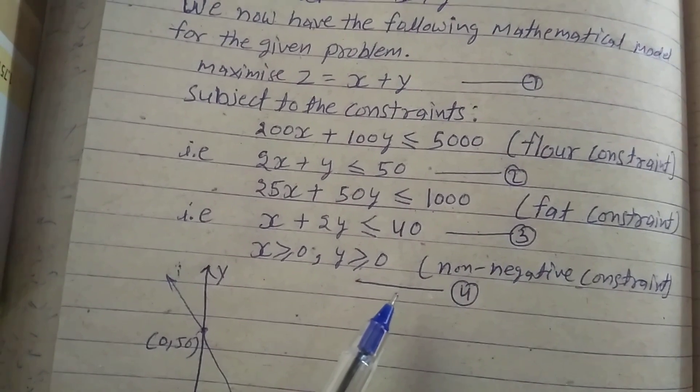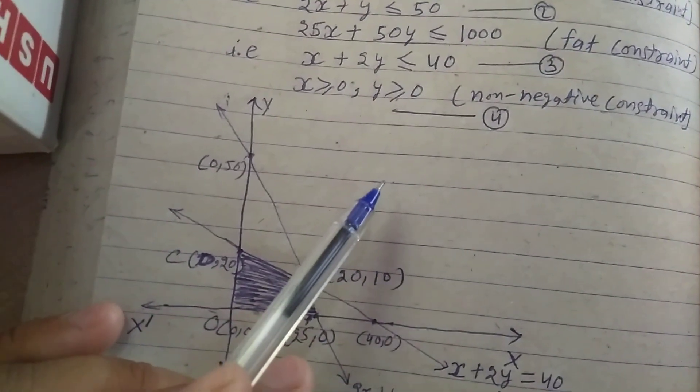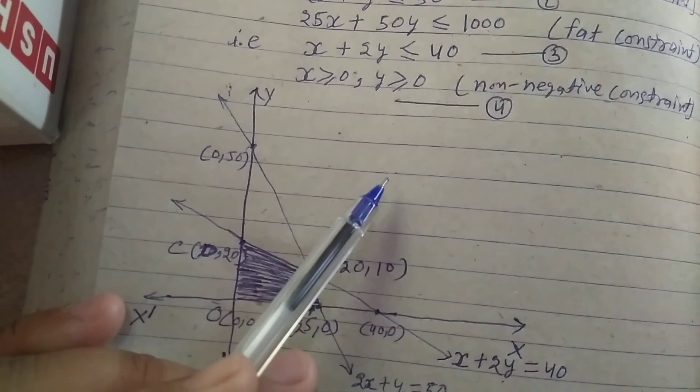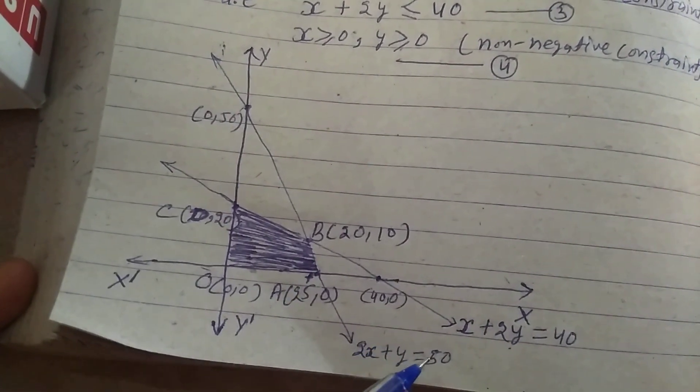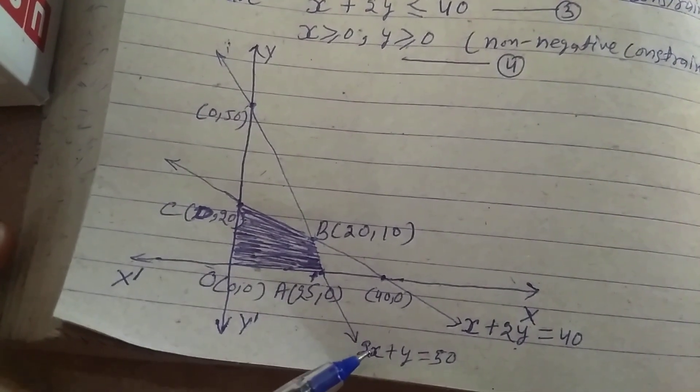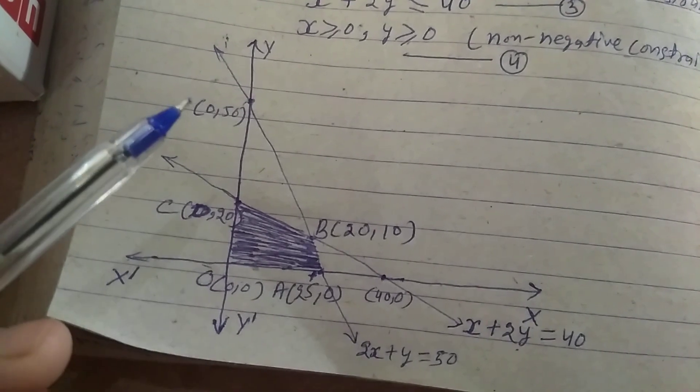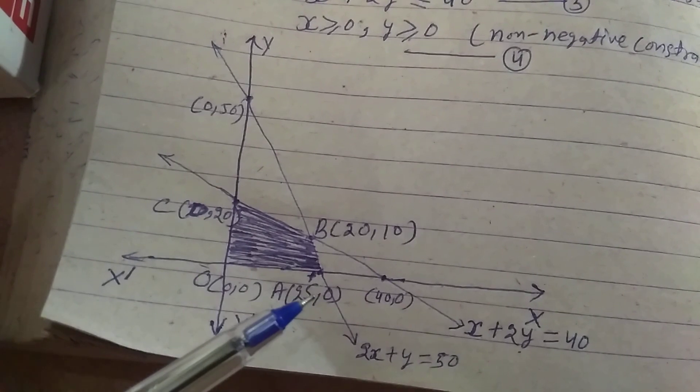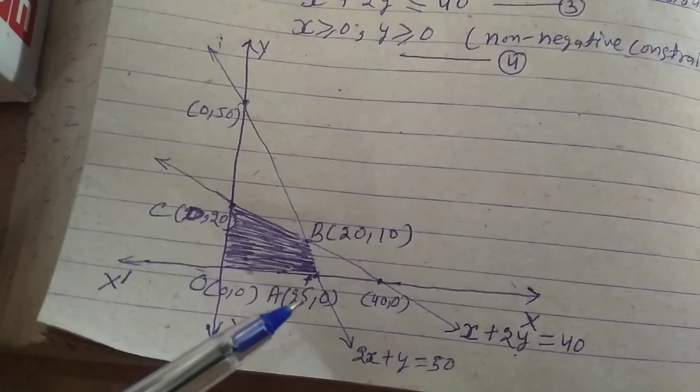And then draw the graph in xy plane to use the 2, 3, and 4 constraints. 2x plus y is equal to 50, let's draw this line. When x is equal to 0, y is equal to 50, means point (0, 50). And when y is equal to 0, then x is equal to 25, so point A is (25, 0).